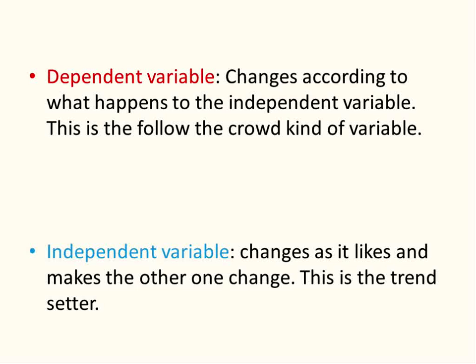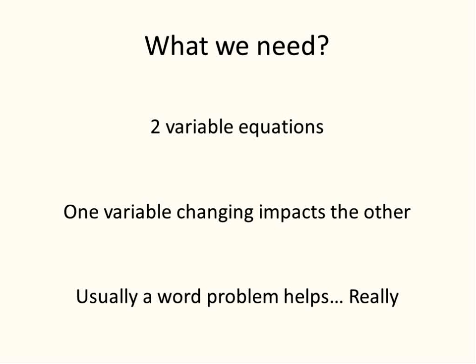First off, I need to tell what we need to have to be able to have some dependent and independent variables. First, your equation needs to have at least two variables. We're going to focus on two variable equations or equations with two variables. And one variable must be impacting the other.